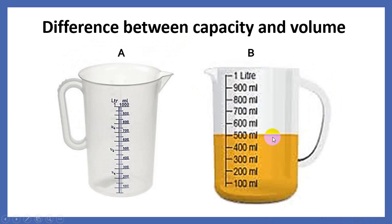The capacity of both jugs is 1 liter. But the volume in Jug B is less than 1 liter. Capacity is how much liquid this jug can contain, and Volume is how much it is actually containing at the moment.